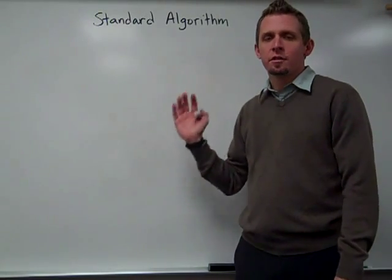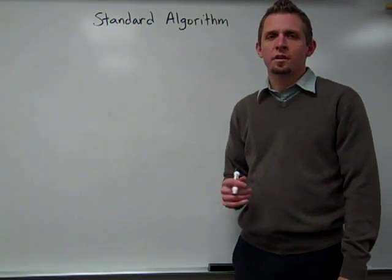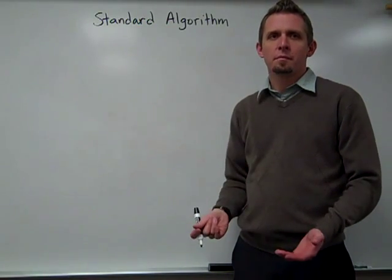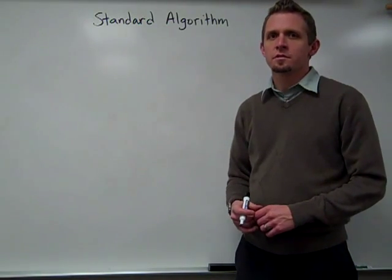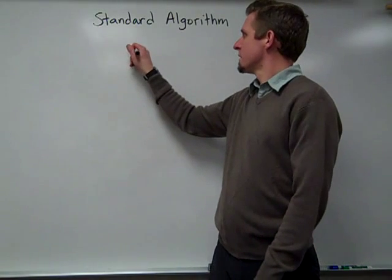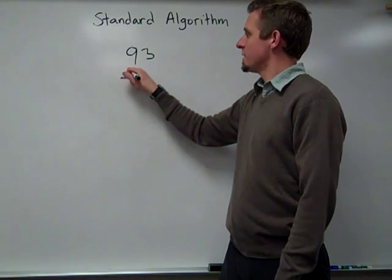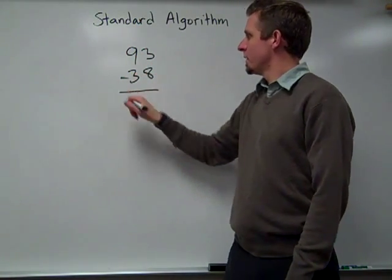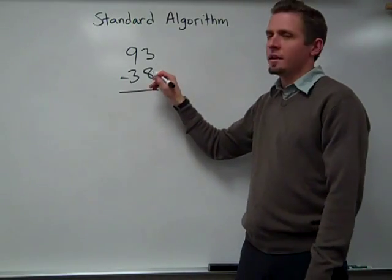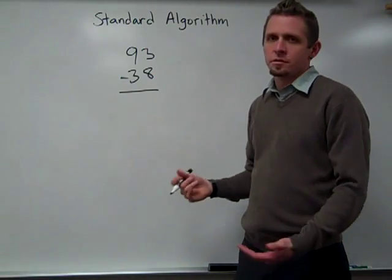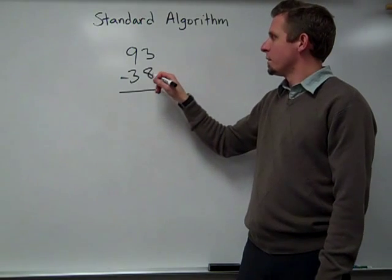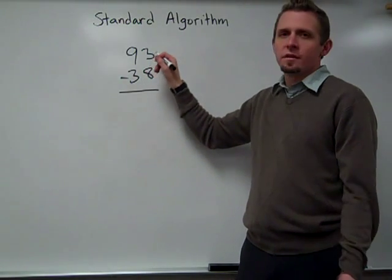This next method, the standard algorithm, is the method that most parents are familiar with. It's the method that probably most of us learned when we were in school. It goes like this. 93 minus 38. We were taught that we can't take 8 from 3, which we know isn't true. But what we need to do is we don't have enough ones.